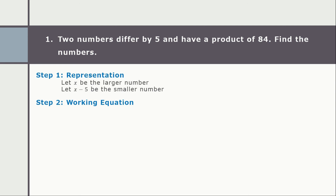For step two, we write our working equation. Since we are talking about the product, we have x multiplied by (x minus 5) equals 84. Our working equation is: x(x − 5) = 84.